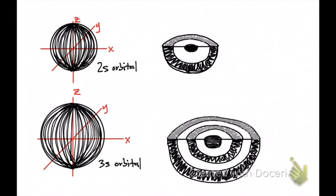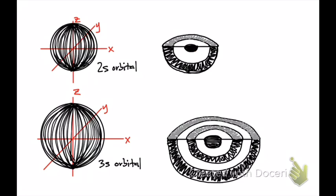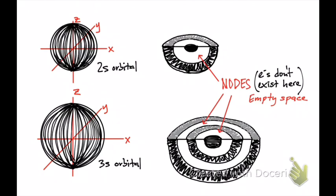Now let's look at a cross-section of the orbitals. When you cut a small piece of the orbitals, this is what it would look like inside. This is a 2S orbital where you have a blank or white space inside. This tells you that there are regions of space within the orbital in which electrons cannot be found. They have a name — they're called nodes. In the nodes, electrons don't exist; it's basically just empty space.